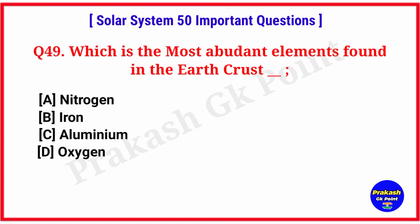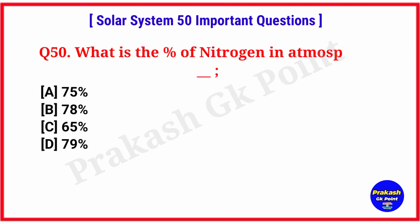Which is the most abundant element found in the Earth's crust? Answer: option D, Oxygen. What is the percentage of nitrogen in the atmosphere? Answer: option B, 78%.